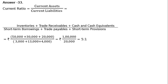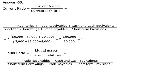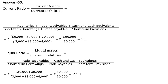Then comes the liquid ratio. Liquid ratio is equal to liquid assets upon current liabilities. Liquid assets are trade receivables plus cash and cash equivalents — you just drop inventories, and there are no prepaid expenses — divided by current liabilities: short-term borrowings plus trade payables plus short-term provisions.